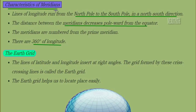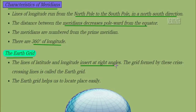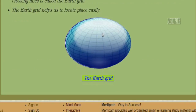Characteristics of longitudes: these lines always run in a north-to-south direction from the north pole to the south pole. The distance between meridians decreases from the equator towards the poles. Meridians are numbered from the prime meridian and together make 360 degrees of longitude. The lines of latitudes and longitudes meet at right angles — 90 degrees — forming a rectangular grid. This crisscrossing network is known as the earth grid, and it helps us locate places easily.